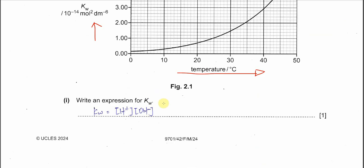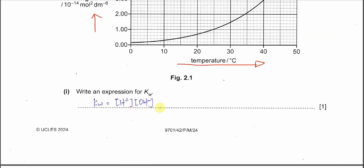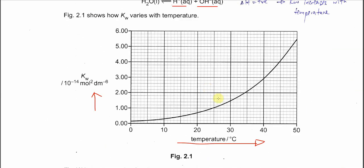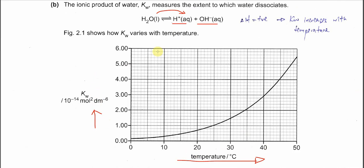Part 1: Write the expression for Kw. Very easy, it's the concentration of hydrogen ion times the concentration of hydroxide. Part 2: Use the information in Figure 2.1 to deduce whether the dissociation of water is endothermic. It's going to be endothermic because Kw increases with temperature. When temperature increases, Kw increases means it forms more ions. It tries to absorb the heat and forms hydrogen ion and hydroxide.